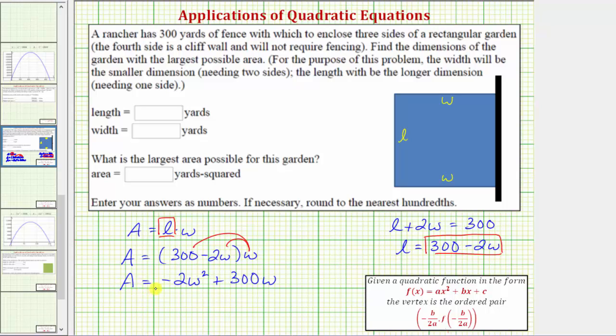Now that we have area expressed in terms of one variable, the variable w, we should recognize that we have a quadratic function or a quadratic equation, and therefore if we were to graph this, we would have a parabola. And because the coefficient of the w squared term is negative, we'd have a parabola that opens down.